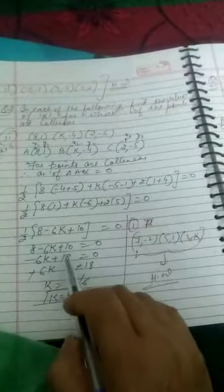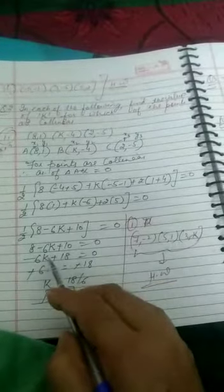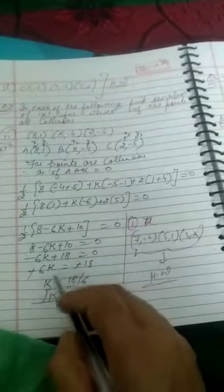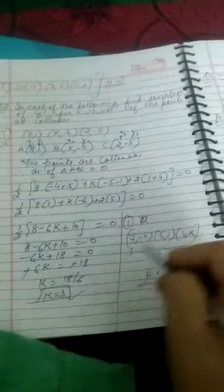Minus 6k, 10 plus 8, 18, that is equal to 0. 18 and this is equal to 0, and k equal to 3. And first part is the homework for you, this is the same question.